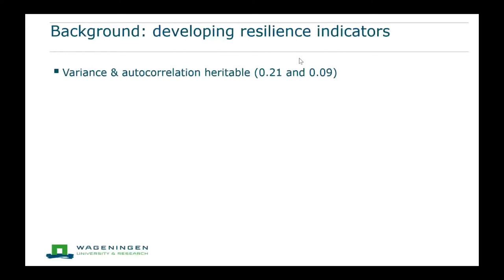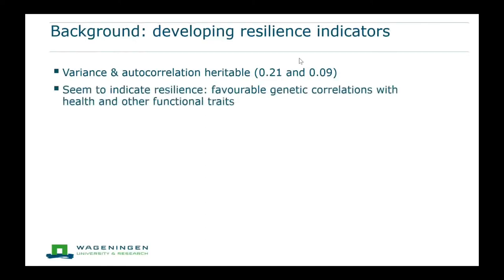We estimated heritabilities for these resilience indicators and they were both heritable, so you can change them through selection. We also had some first indications that they indicate resilience, because they had favorable genetic correlations with some other traits related to resilience, like longevity and health traits.